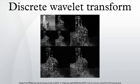The Haar DWT illustrates the desirable properties of wavelets in general. First, it can be performed in linear operations. Second, it captures not only a notion of the frequency content of the input by examining it at different scales, but also temporal content — that is, the times at which these frequencies occur. Combined, these two properties make the fast wavelet transform an alternative to the conventional fast Fourier transform.